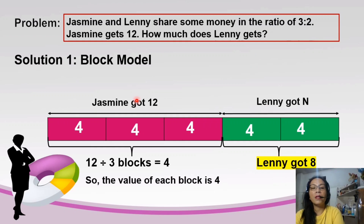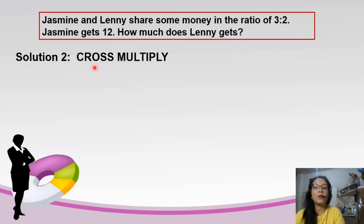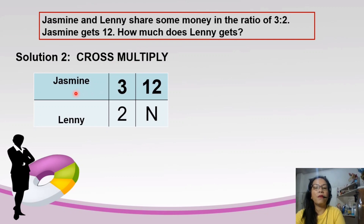That is the block model for finding the solution in ratio. Let's proceed to the next one. Using the same problem — Jasmine and Lenny share some money in the ratio of 3 is to 2, Jasmine gets 12, how much does Lenny get — the second solution: let's make use of cross multiplication. Cross multiplication is common to us as we have been using it in fractions.